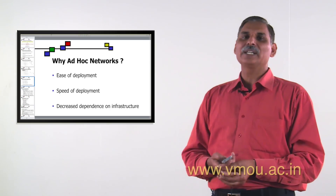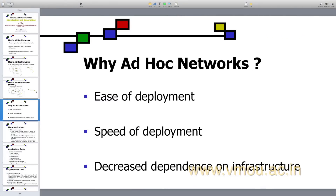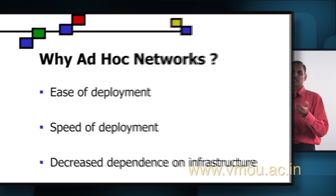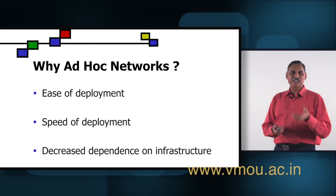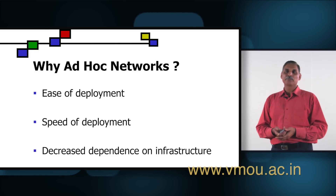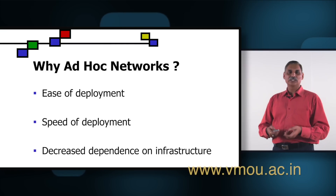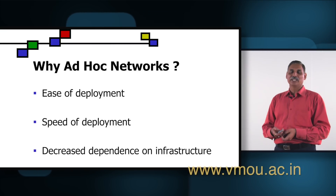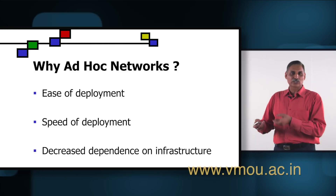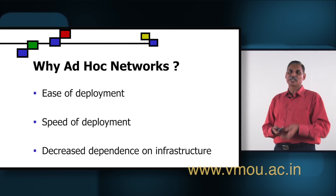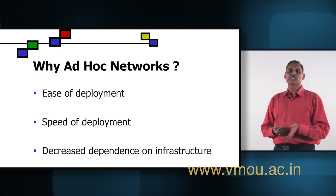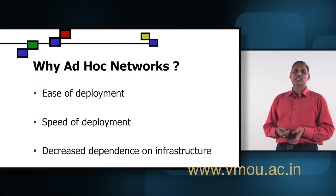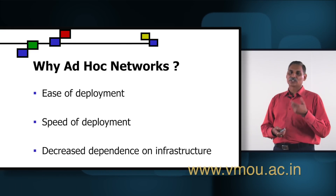Why ad hoc networks? The question arises why at all we should go for ad hoc networks when our wired network was doing well. The simple reason is ease of deployment, because the devices are mobile — I do not need any wired network or any fixed infrastructure. Another thing is speed of deployment, because fixed infrastructure is not there and wires need not be put in or dug into the earth. Thirdly, there is decreased dependence on infrastructure. That is why ad hoc networks are being preferred over wired or fixed infrastructure networks.